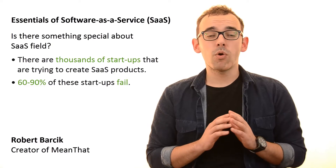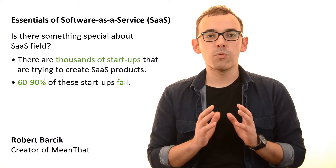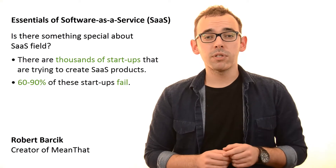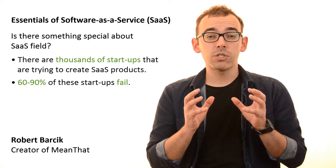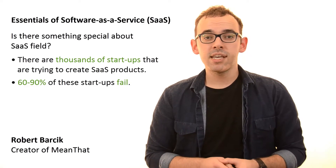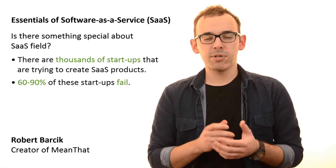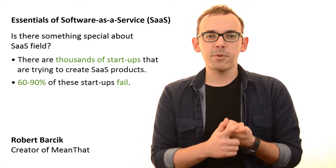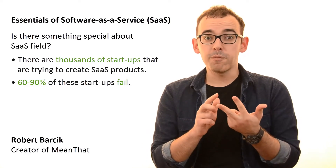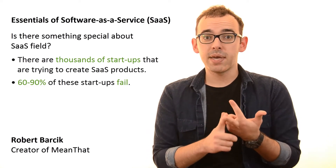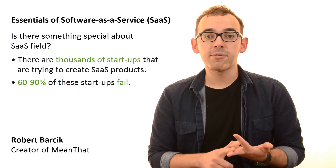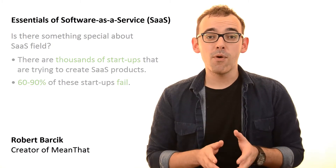It is estimated that between 60 and 90% of Software as a Service startups fail. We are going to discuss all of these, including why these startups fail. But most importantly, we are going to talk about Software as a Service specific business strategies. These are going to include the Lean Startup Approach and Creation of Value metrics, as well as business metrics such as Customer Acquisition Cost and Customer Lifetime Value, and there is going to be much more.